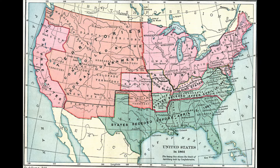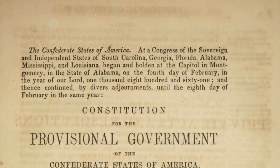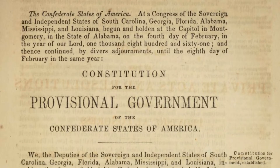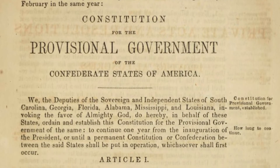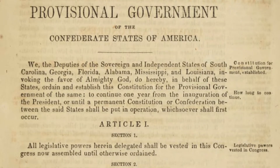Then Florida, Alabama, Georgia, Louisiana, and Texas seceded. The Convention of Seceded States was called in Montgomery, Alabama, and the Confederate Provisional Constitution was drafted and quickly ratified by the seven states.